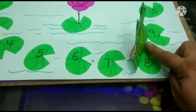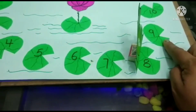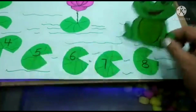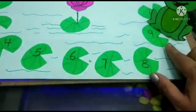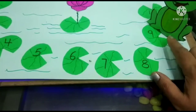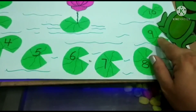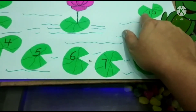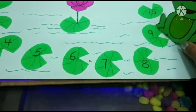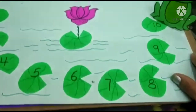Now what comes after eight? Tell me — what comes after eight? It is number nine! He jumps and lands on number nine. And now, tell me what is there after number nine? It is number ten! He jumps and lands on number ten.